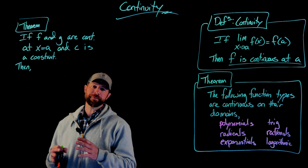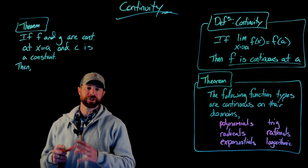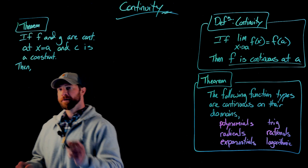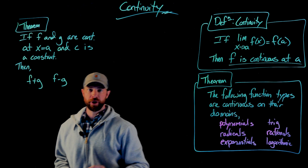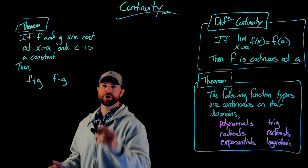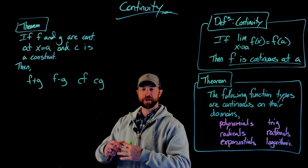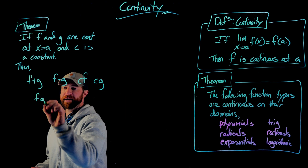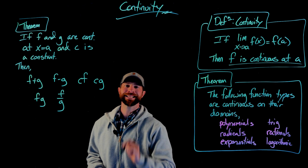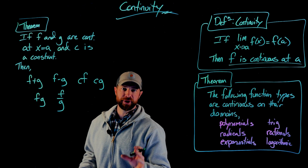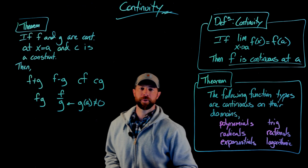Our next theorem states that if you have two functions that are known to be continuous at a certain x value, and if you consider c a constant, then the following combinations are also continuous at that x value: f plus g, f minus g, c times f, and c times g are all continuous at a. Also, if you multiply f and g, the resulting function is continuous at a. And if you divide them, it's also continuous, given that g of a is not equal to zero — we can't divide by zero.